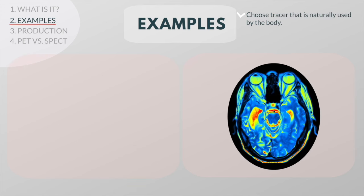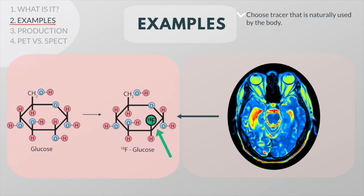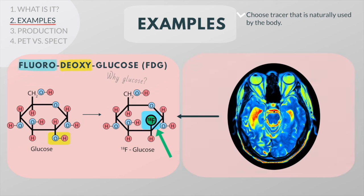For example, in PET scans of the brain, a radioactive atom is applied to glucose to create a radioactive tracer called fluorodeoxyglucose. FDG does not have a hydroxyl group at the C2 position; instead it contains a radioactive atom, fluorine-18. We mainly use FDG as a tracer for brain PET scans because glucose is the brain's main source of energy.